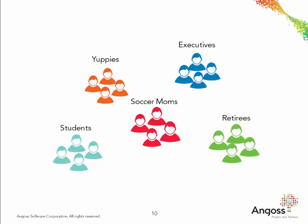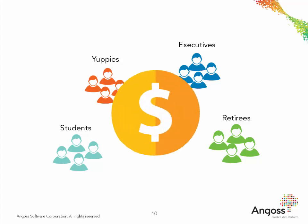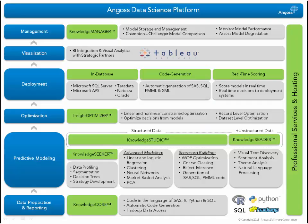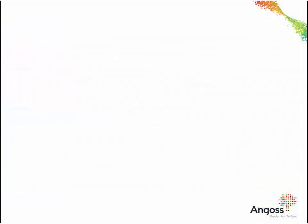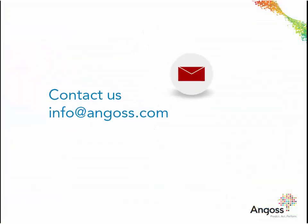By segmenting customers into different groups, businesses can focus not only on the overall behavior of customers but also on their future profitability, allowing companies to better focus resources on the most profitable customers. ANGOSS Data Science Platform offers segmentation functionality found in Knowledge Seeker, Knowledge Studio, and Knowledge Reader software. To find out how ANGOSS software and services can help with customer segmentation, contact us at info@angoss.com.